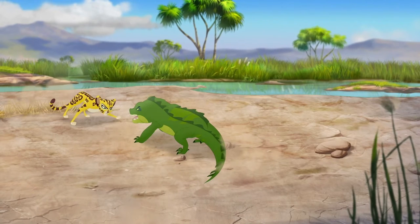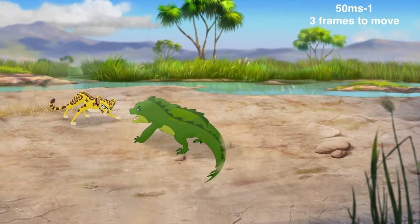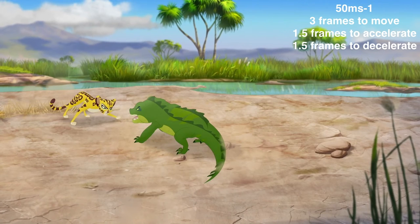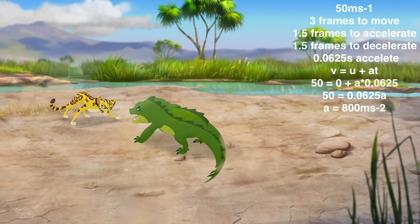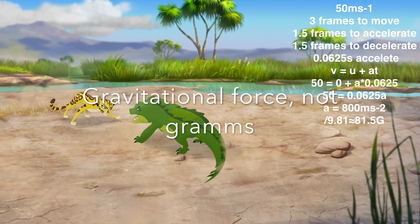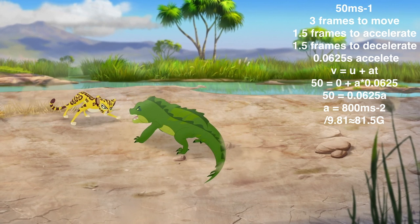A bonus element of this video will be how fast Fuley can accelerate. The maximum speed I decided on was 50 meters per second, which is slightly more than my initial calculation but still safely below a second average speed calculation. It took Fuley 3 frames to complete this movement, during which she accelerates and decelerates to a stop. If we assume she takes half the time for each part, Fuley accelerates to maximum speed in 0.0625 seconds. Using the equation V equals U plus aT, the acceleration works out to 800 meters per second squared, which is 81.5 g's — enough to tear a normal cheetah apart. So Fuley is definitely a super cheetah.